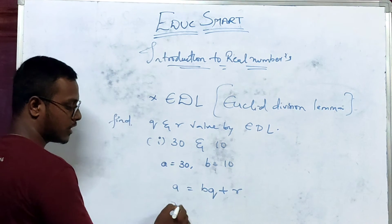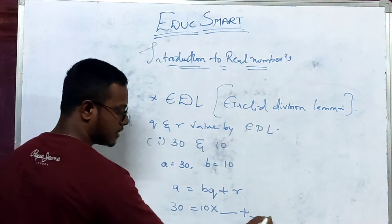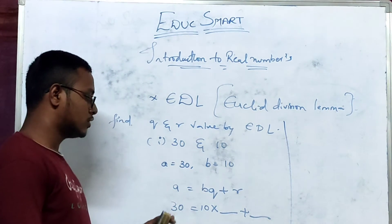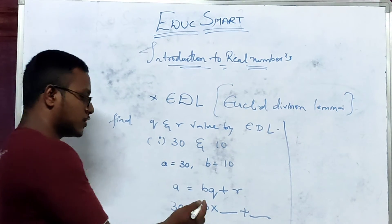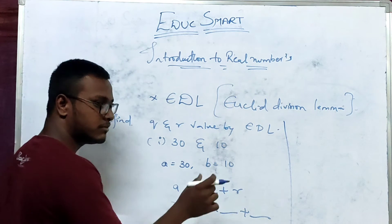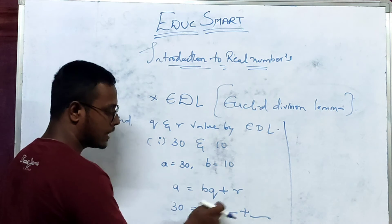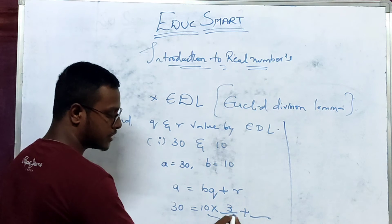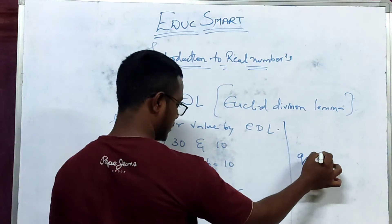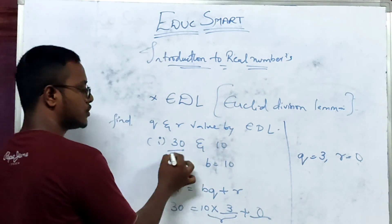A is equal to bq plus r. What is a here? 30. So 30 is equal to — what is b here? 10. So 10 into dash plus dash. 10 times 3 is equal to 30. So 30 equals 30, and r equals 0. The q value is 3 and r value is 0 for this given question with 30 and 10.